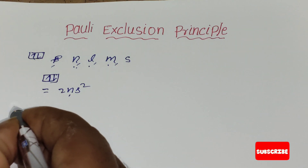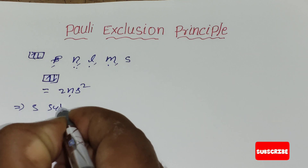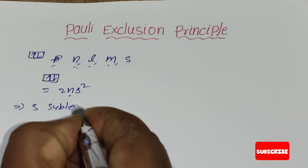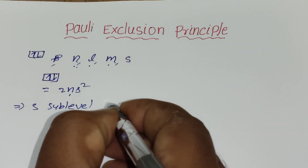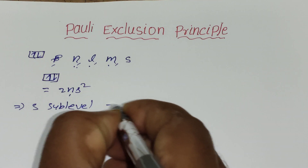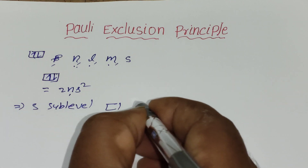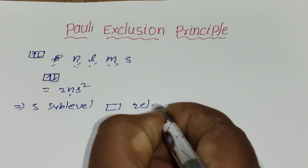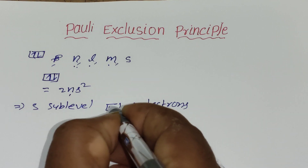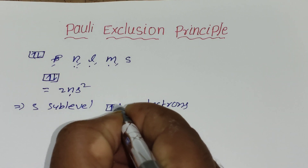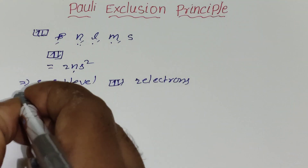For example, the s sublevel has only one orbital, and since the maximum capacity of an orbital is two electrons, the s sublevel holds only two electrons — one with clockwise spin and another with anticlockwise spin.